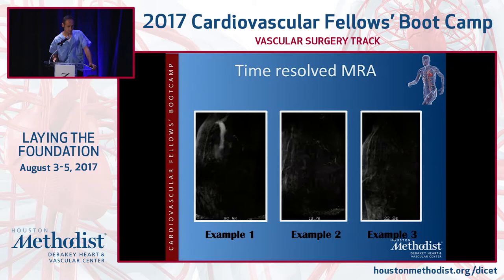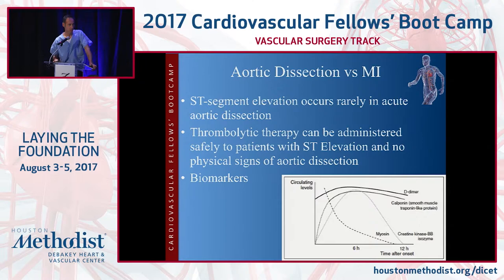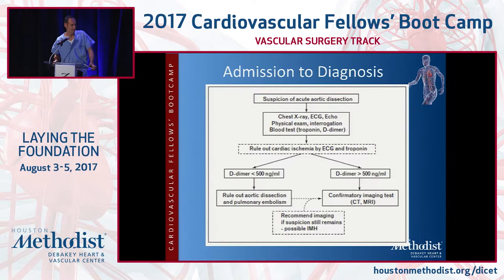This is an ECG-gated CTA, and you can see many of the same dynamic components — it can be done in CT, though it's a little more refined on MR using cardiac MR protocols. As for blood parameters, D-dimer as a biomarker is the most important. If it's above 500, you should consider that there is a dissection. Not all ERs are used to doing this, but it's definitely something you can use.